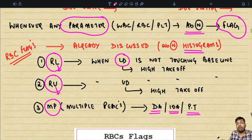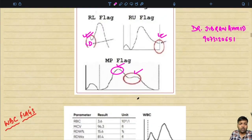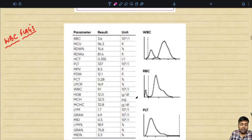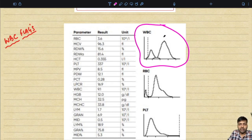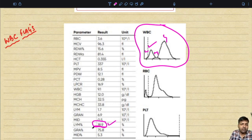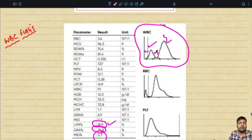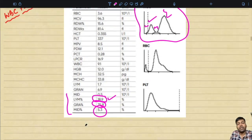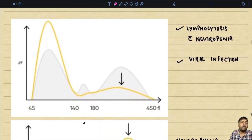When a machine reading shows a flag, it mandates examination of that case using the peripheral blood smear. Looking at WBC flags: in a normal WBC histogram, lymphocyte percentage is around 18–19%, the granulocyte group is around 75%, and the mid is around 5.3%. Everything in normal range produces a normal-looking histogram. We will now examine the WBC histogram in relation to abnormalities.